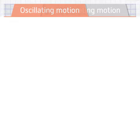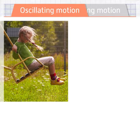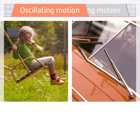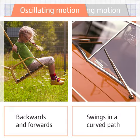Oscillating motion can be seen in the movements of a swing in a playground and in the windscreen wipers on a car. Oscillating movement is both backwards and forwards, but it swings in a curved path instead of following a straight line.